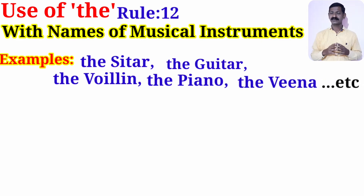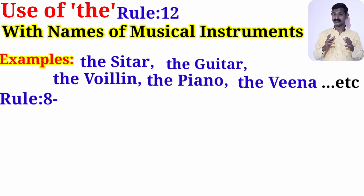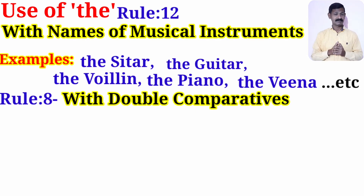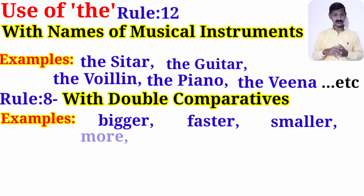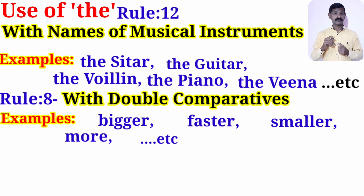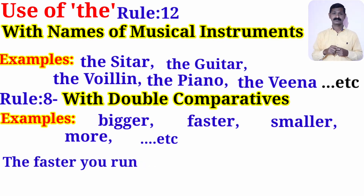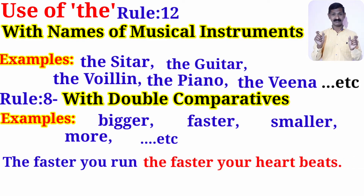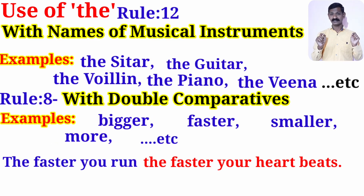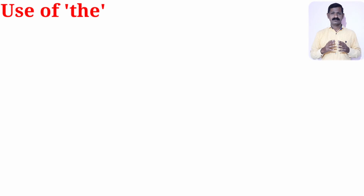We use article 'the' with double comparatives. Comparatives include words like bigger, faster, smaller, more, and so on. For example: 'The faster you run, the faster the heart beats.' Here 'faster' and 'faster' are double comparatives, and we use article 'the' with both.